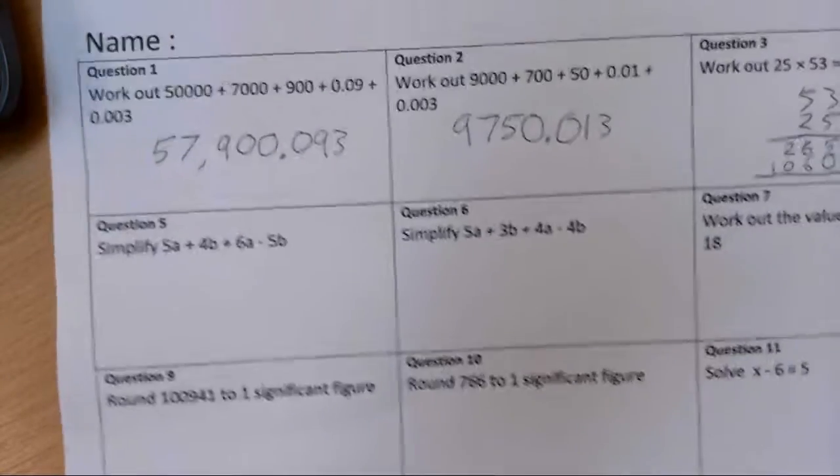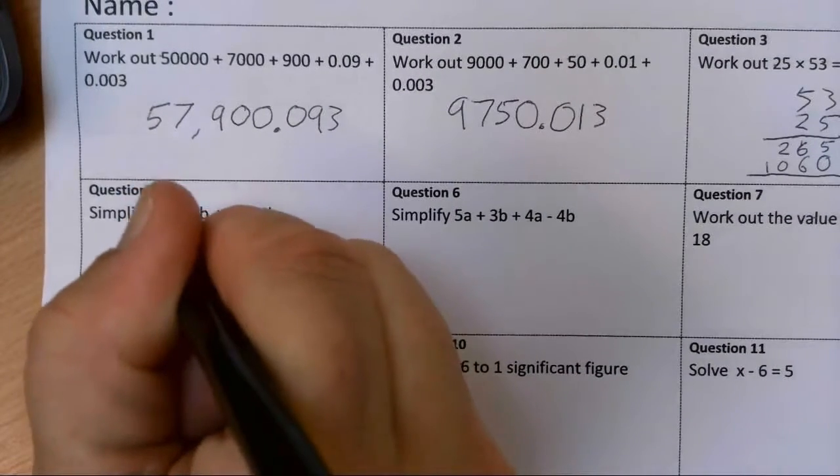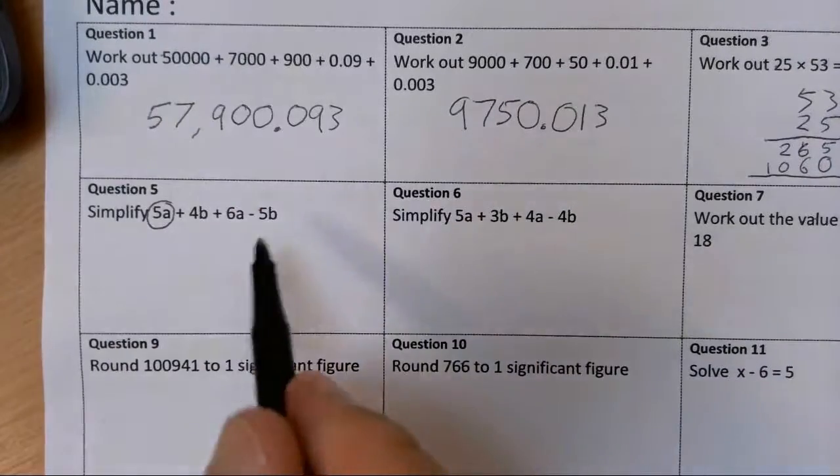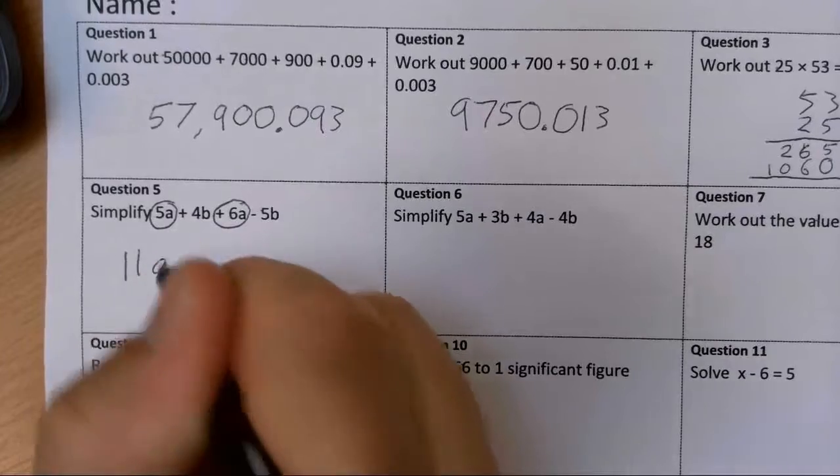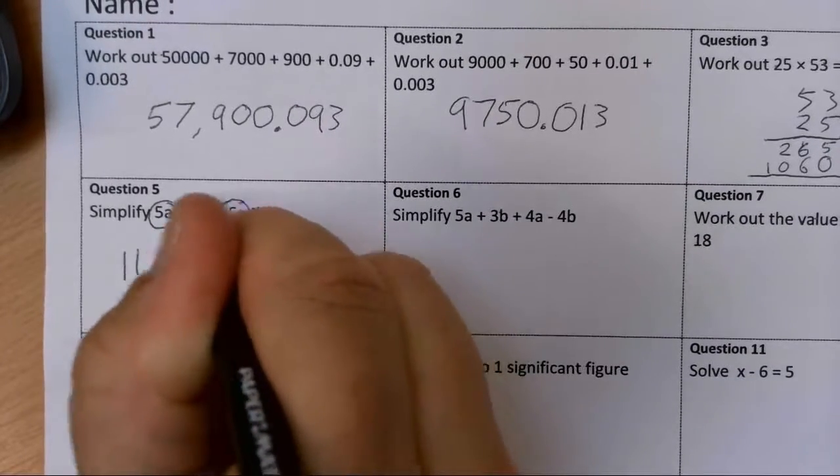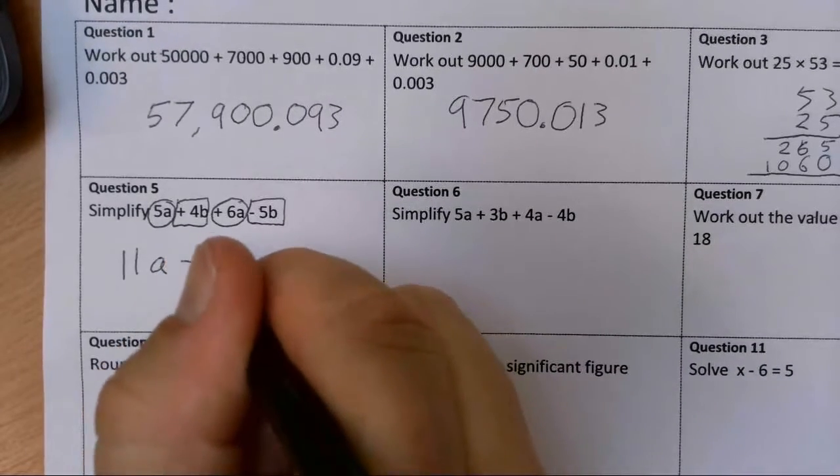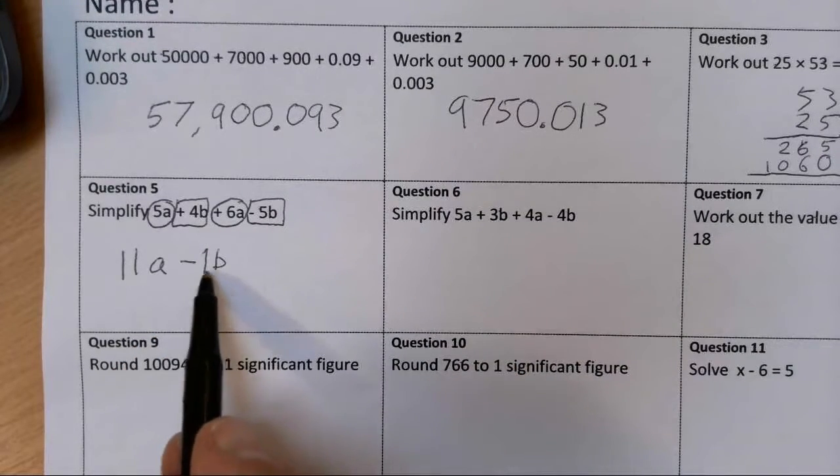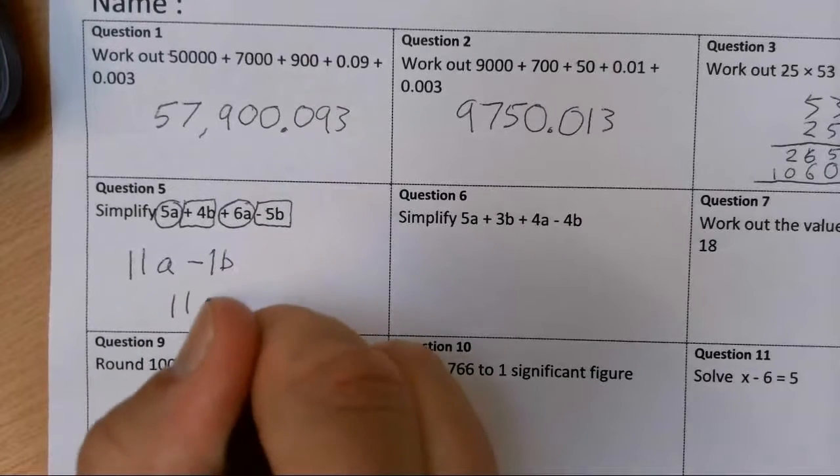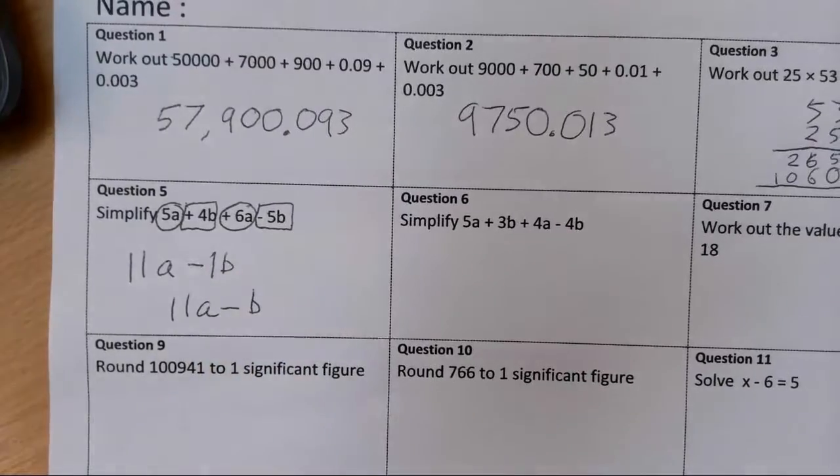Question 5, we've just been doing this work, so we should all be really good at it. So we've got 5 lots of A, and if we find the other like term, another 6 lots of A, we've got 11 lots of A. Then we've got the B's, these are like terms. Now, I need to be careful. If I'm on plus 4 and I take away 5, I'm on minus 1, so I've got minus 1 B, but we don't need to write 1. We can just write that as 11A take away B. If you've got this, it's not wrong, but we would prefer to have it written like that.